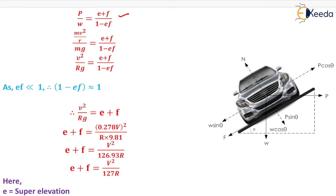Substituting P = MV²/R and W = MG, we get V² upon RG equals (e + f) upon (1 - ef). Since e and f are both very small, ef is nearly zero, so (1 - ef) ≈ 1. Thus V²/RG equals e + f. Converting speed V from km/h to m/s by multiplying by 0.278, and using g = 9.81, we get the formula: e + f = V² / 127R.